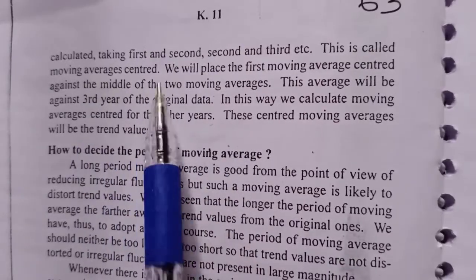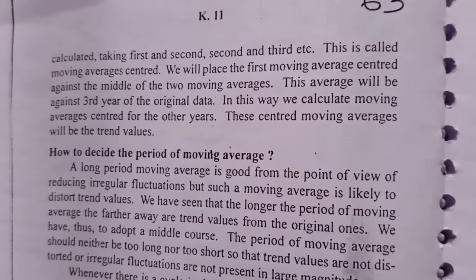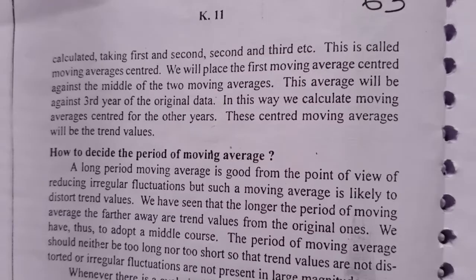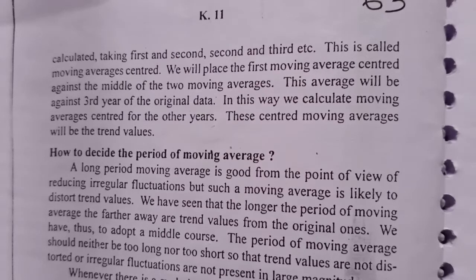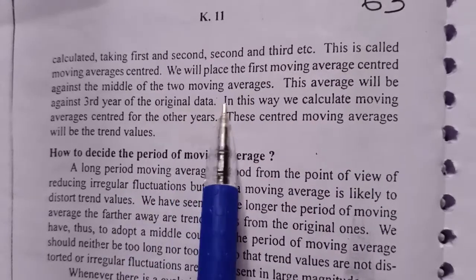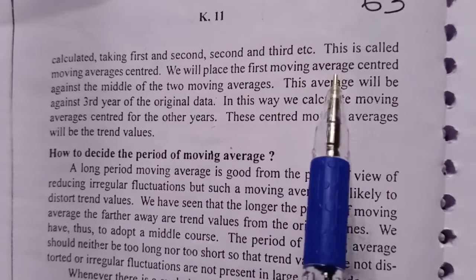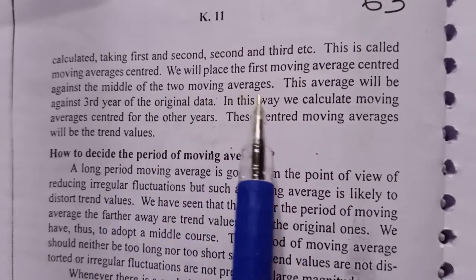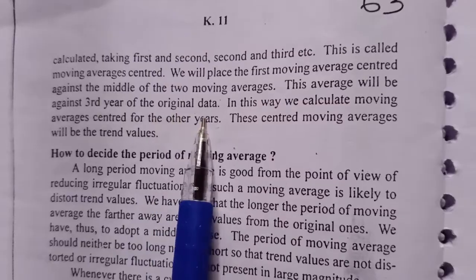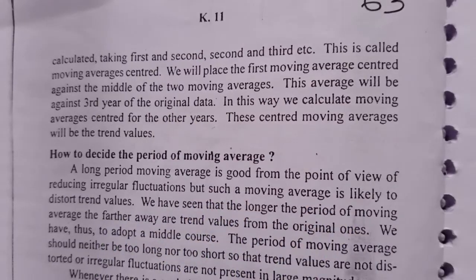Moving averages centered — okay. Now we have moving averages. The first moving average centered is taken, then the second, and the third. We will place the first moving averages centered against the middle of the two moving averages. We are going to consider moving average centered and go to the middle of the two moving averages. This average will be against the third year of the original data. In this way, we calculate moving averages centered for the other years.